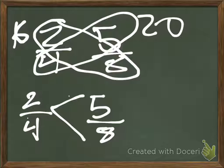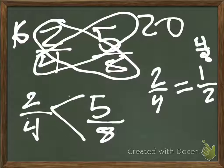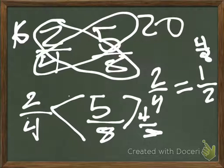Also, you do this. Two fourths is equal to one half. One half equals four eighths. And five eighths is bigger than four eighths.